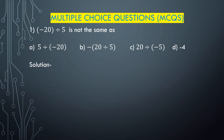Now MCQ question number 1: minus 20 divided by 5 is not the same as which option? Options are: A) 5 divided by minus 20, B) minus 20 divided by 5, C) 20 divided by minus 5, and D) minus 4. Minus 20 divided by 5: minus divided by plus is minus, and 20 divided by 5 is 4, so it is minus 4. Option A: 5 divided by minus 20 — plus divided by minus is minus.